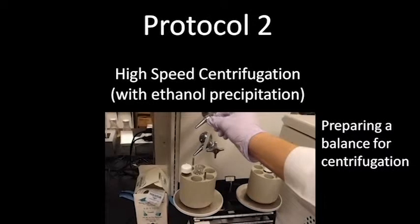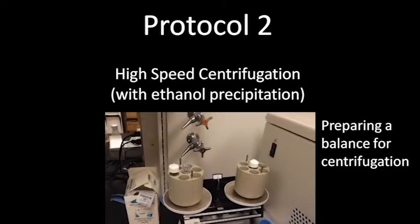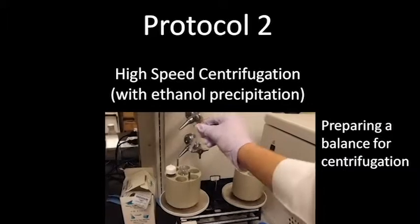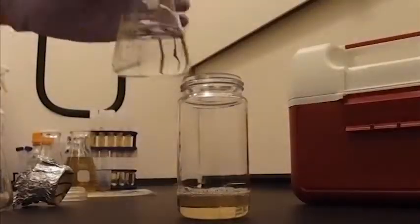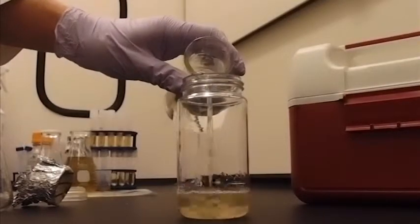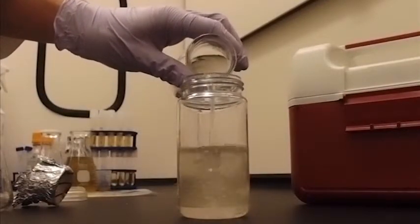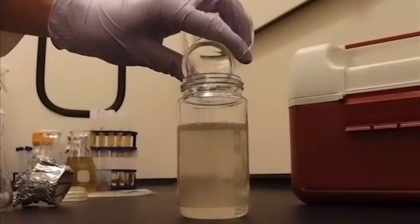The second protocol begins with high-speed centrifugation, which produces a force of 30,000 G. The bulk force detaches the PIA from the cells and it goes into solution. To remove some of the impurities, the sample is precipitated with ethanol. Adding ethanol and letting it sit overnight causes the PIA to become solid.